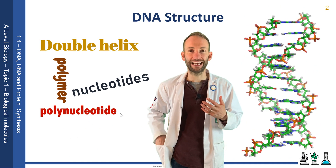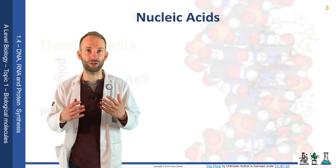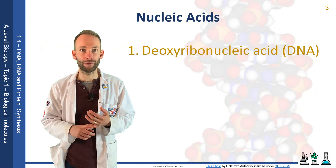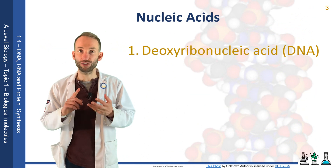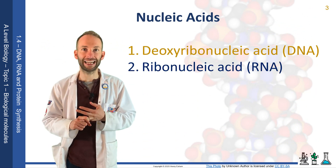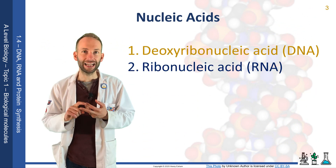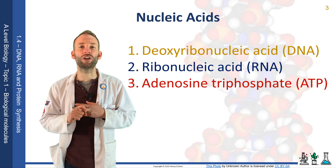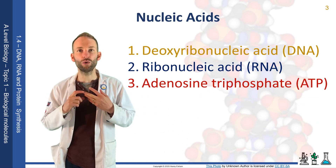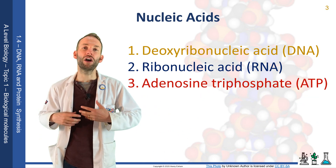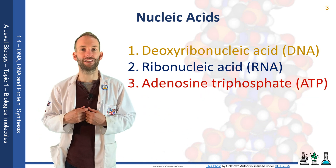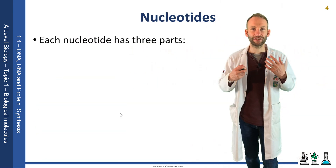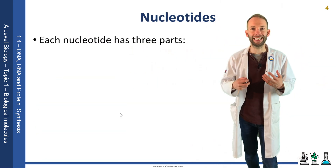You're going to come across some other nucleic acids as well in the course. You've got DNA, which we'll talk about now. You've also got RNA, which is another type of nucleic acid. And actually, ATP is also a nucleic acid. All of these molecules are made up of nucleotides. But let's look at the structure of DNA.